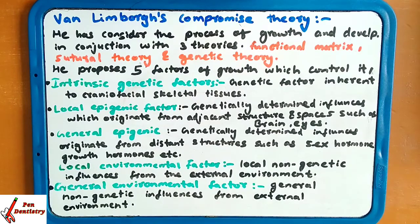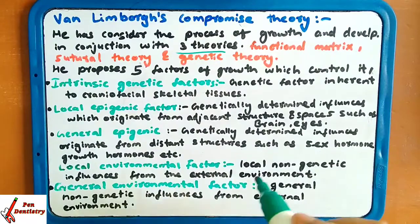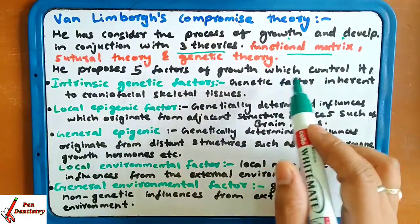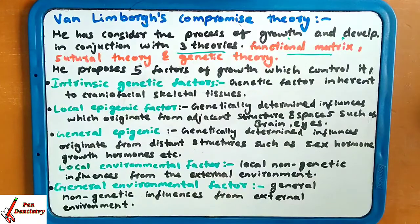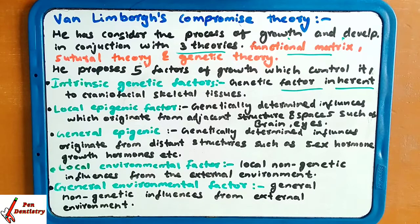Van Lomborg compromise theory. He considered the process of growth and development in conjunction with three theories — functional matrix theory, sutural theory, and genetic theory — all together. He proposes five factors. The first one is the intrinsic genetic factor: the genetic factor inherent to craniofacial skeletal tissue, meaning factors that are transferred from parent to baby in craniofacial skeletal tissue.